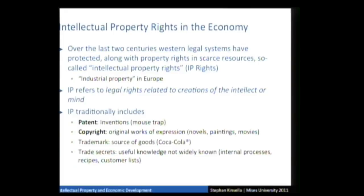IP traditionally includes four main types: patent and copyright — which are the main focus of this discussion — trademark, and trade secret. Patents are basically a monopoly privilege granted by the state covering the exclusive right to make, use, or sell an invention. Copyright is a similar monopoly privilege to be the exclusive person who can copy, distribute, or publicly perform certain original works of expression like novels, paintings, or movies. Trademark identifies the source of goods, and trade secrets describe useful knowledge you keep secret to gain competitive advantage.